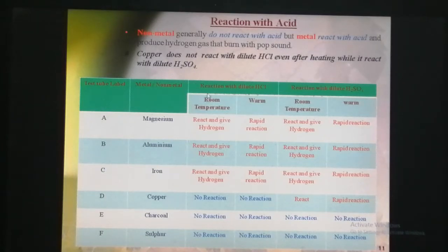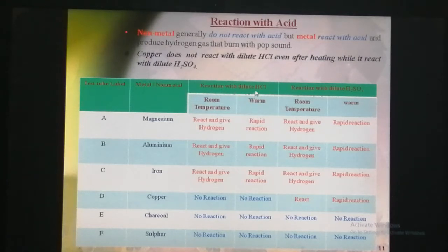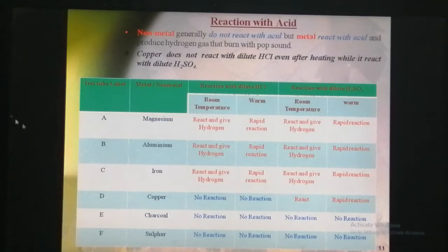With the help of a dropper, we have to add 5 ml of dilute hydrochloric acid to each test tube one by one. Now we have to observe the reaction carefully.